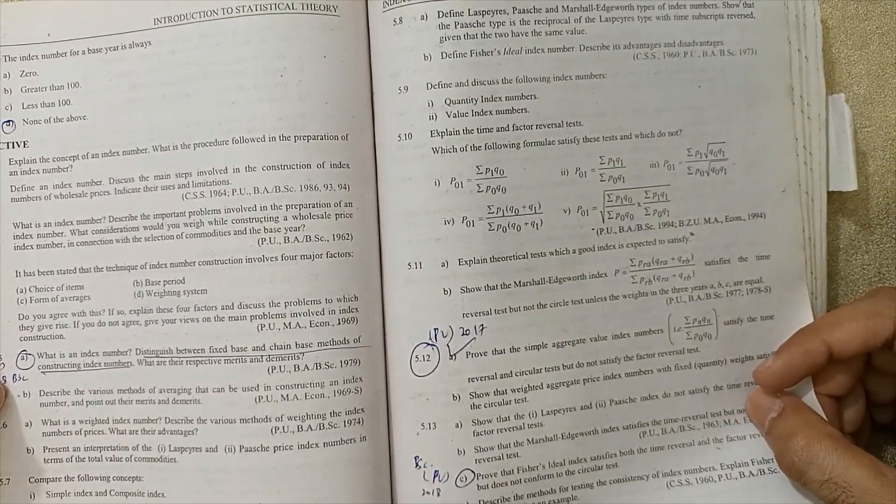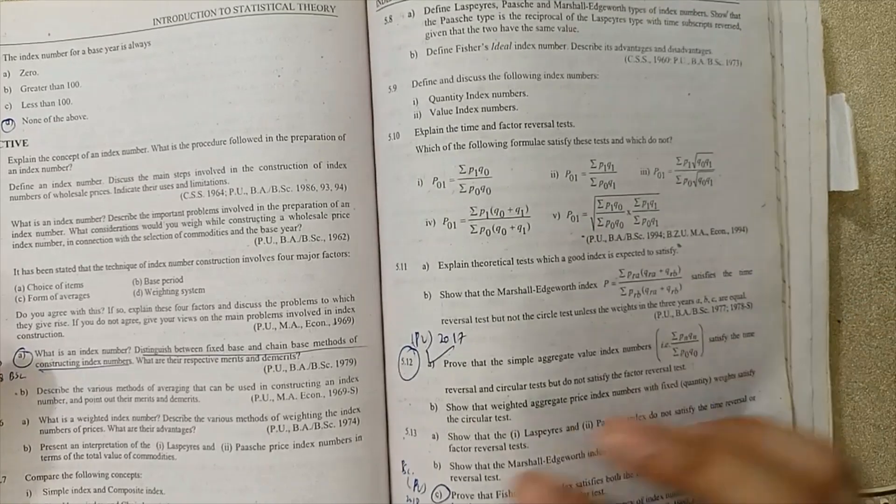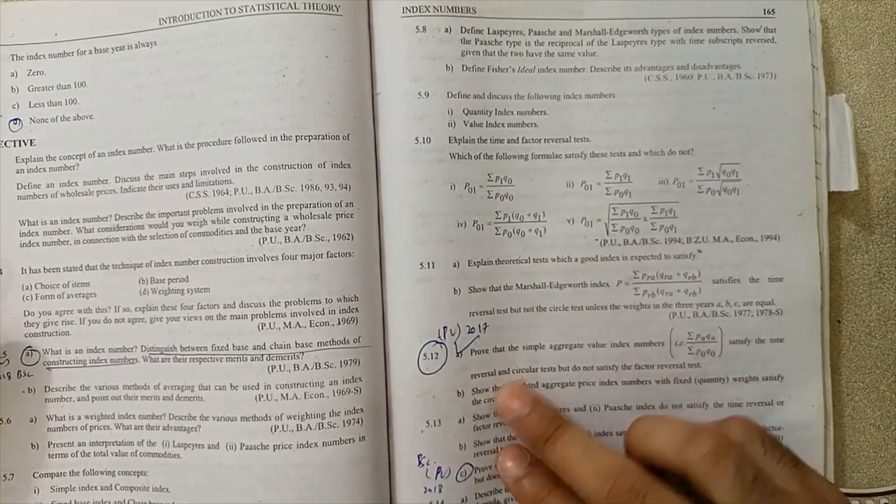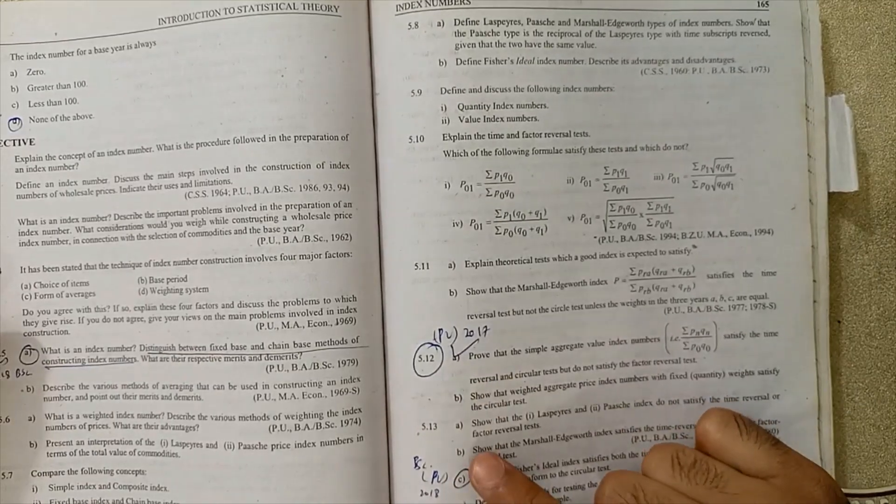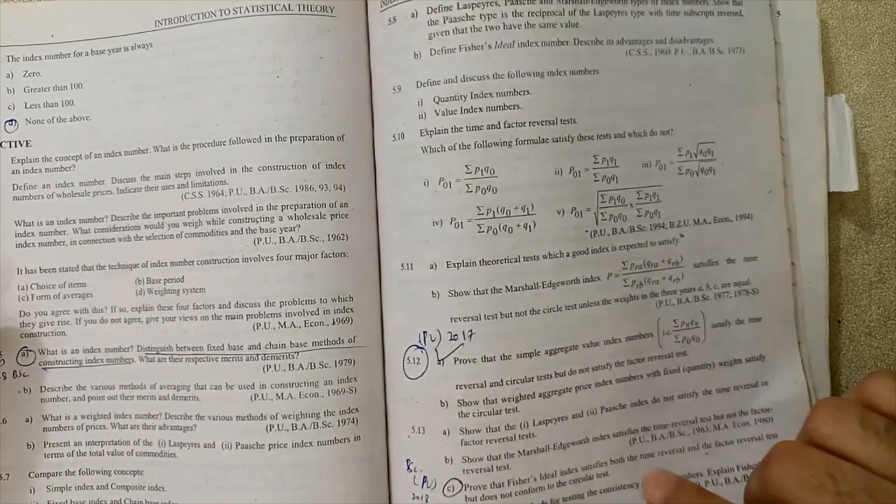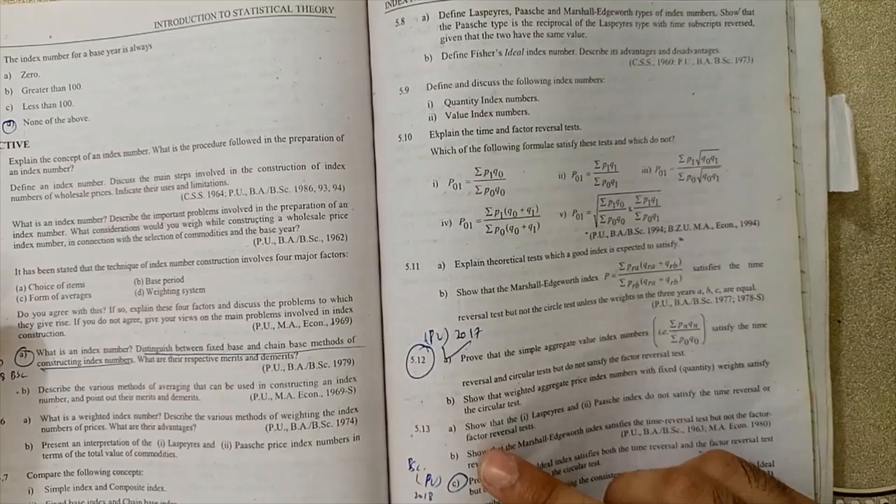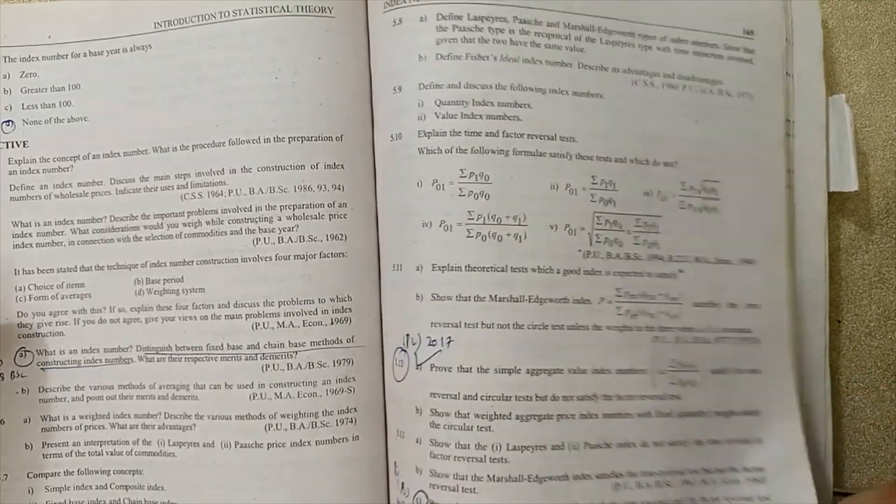Fixed base method, chain base method, variable portion question at 165, Question 5.12 is very, very important for exams. And Question 5.13, C part, and I will recommend that A, B, C parts are very, very important for exams of 2022.